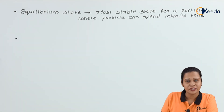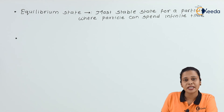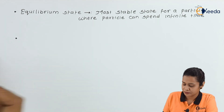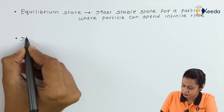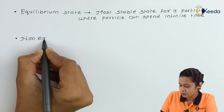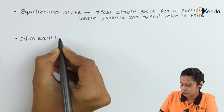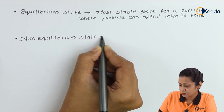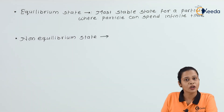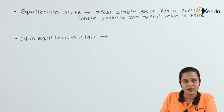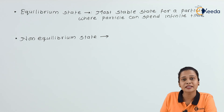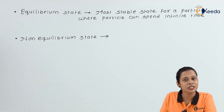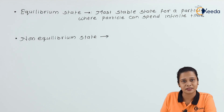The next definition is non-equilibrium state. Non-equilibrium state is a highly unstable state where a particle can spend just 10 raised to minus 8 seconds.